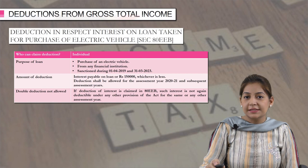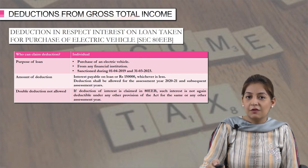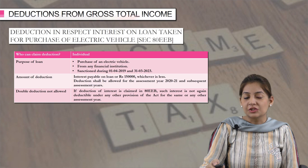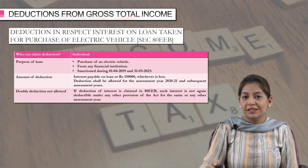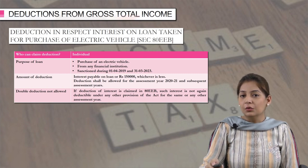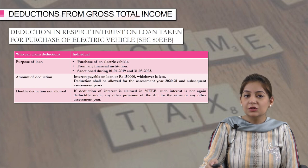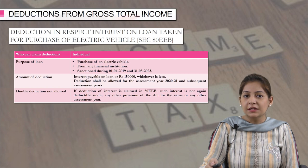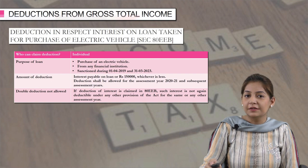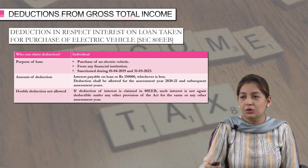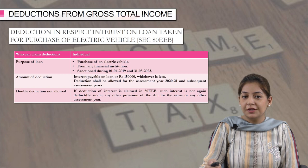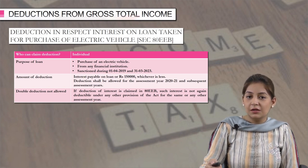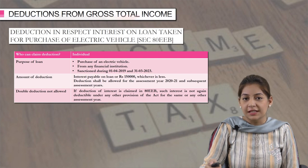The next section is 80EEB. This is in respect of interest on loan taken for purchase of an electric vehicle. So if you have purchased any electric vehicle, you can claim the deduction for the interest on the loan acquired for this purchase. This deduction can be claimed by an individual. The loan must be taken from any financial institution during the period 1st April 2019 to 31st March 2023. The amount of deduction is either the interest payable or rupees 1 lakh 50,000, whichever is less.